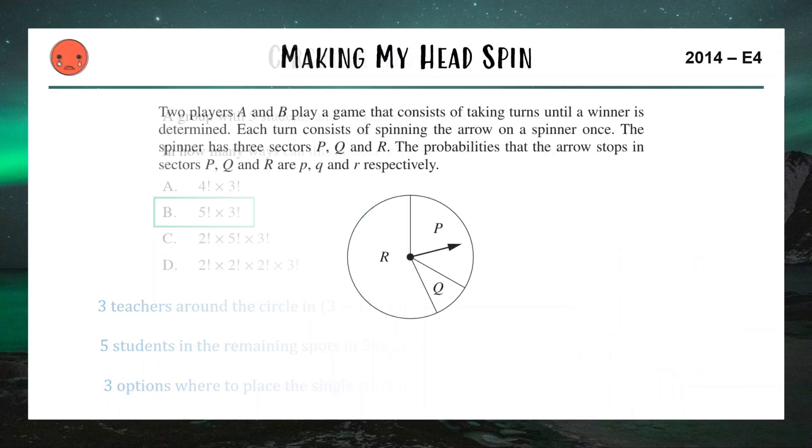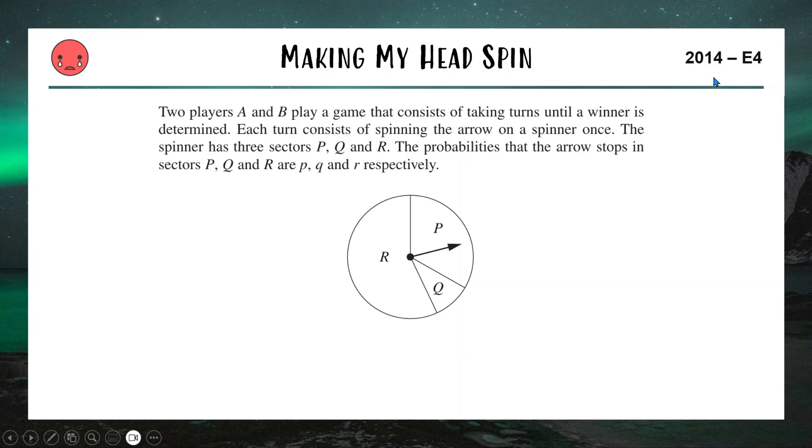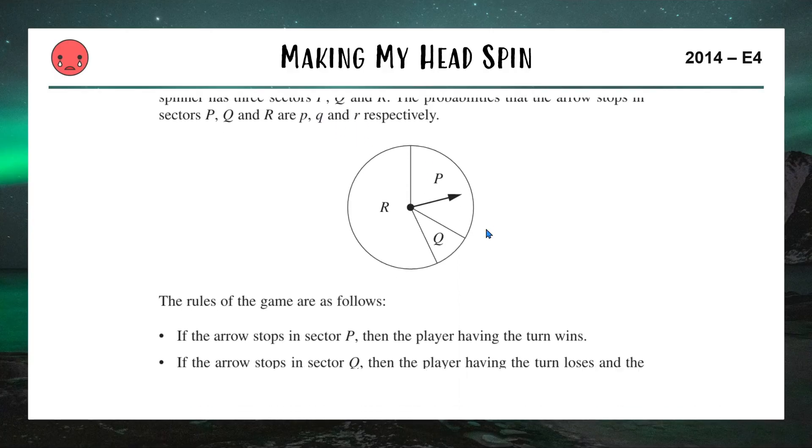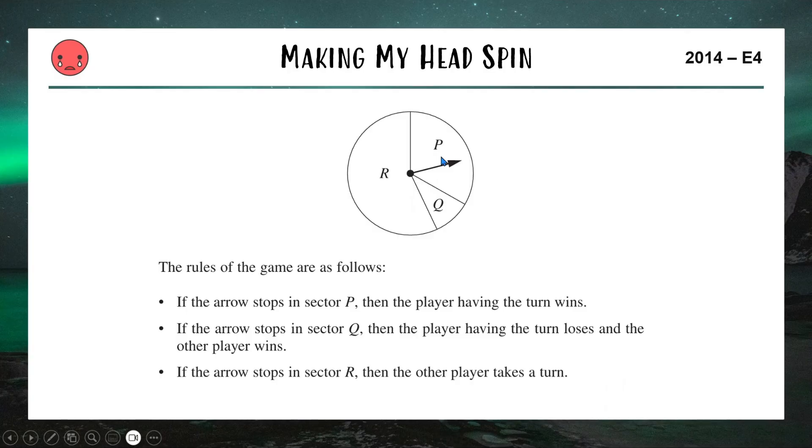And to finish off this video, we have a probability question coming to us from the 2014 HSC exam. This was actually the hardest question in the 2014 extension one math exam. So let's see if we can try and wrap our heads around it. We have two players playing a game and they are spinning a spinner with sections P, R and Q, and the probability of landing in P, R and Q are P, R and Q. Now here are the rules. If I spin it and it lands in section P, I win. If I land in Q, that means I lose and you win. Or if I landed in R, I haven't won or lost, it's just passing to you and now it's your turn to spin. So we've got probability of winning, probability of losing and probability of passing.